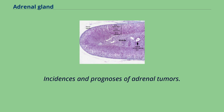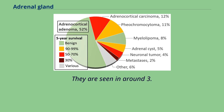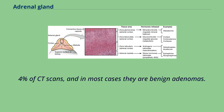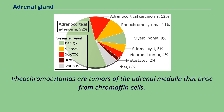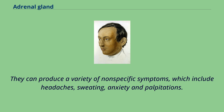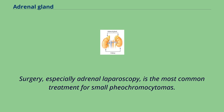Adrenal tumors are commonly found as incidentalomas — unexpected asymptomatic tumors found during medical imaging. They are seen in around 3.4% of CT scans, and in most cases they are benign adenomas. Adrenal carcinomas are very rare, with an incidence of 1 case per million per year. Pheochromocytomas are tumors of the adrenal medulla that arise from chromaffin cells; they can produce a variety of nonspecific symptoms including headaches, sweating, anxiety, and palpitations. Common signs include hypertension and tachycardia. Surgery, especially adrenal laparoscopy, is the most common treatment for small pheochromocytomas.